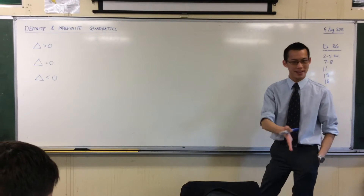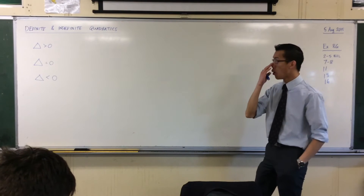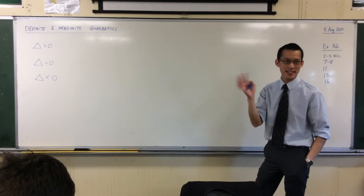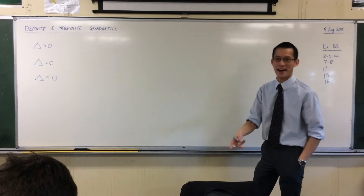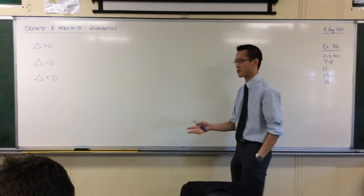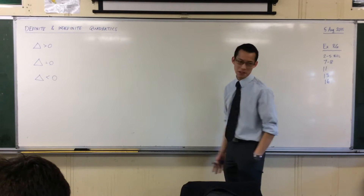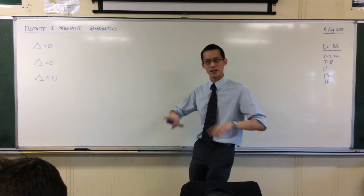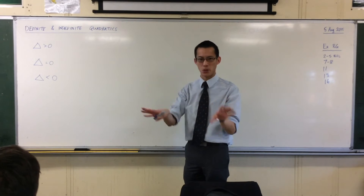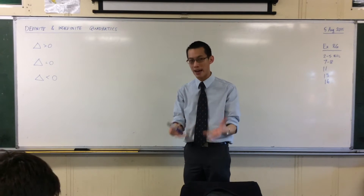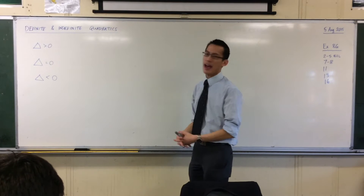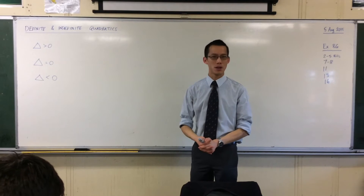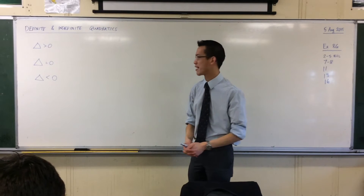We've been looking at the discriminant and all the kinds of things that it tells us about a quadratic. This is why it has the name discriminant — because it discriminates between these different varieties of quadratics and tells you a lot of useful information.